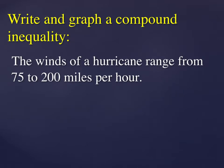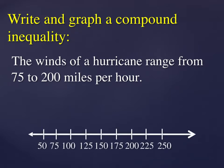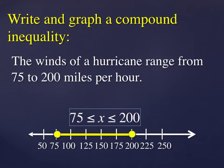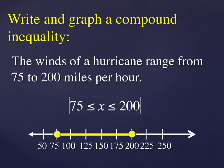Let's write and graph this compound inequality. The winds of a hurricane range from 75 to 200 miles per hour. So the winds can be anywhere from 75 to 200 and we can assume that we're including the endpoints. When we include the endpoints, the solution set looks like this. X is between 75 and 200 including the endpoints.